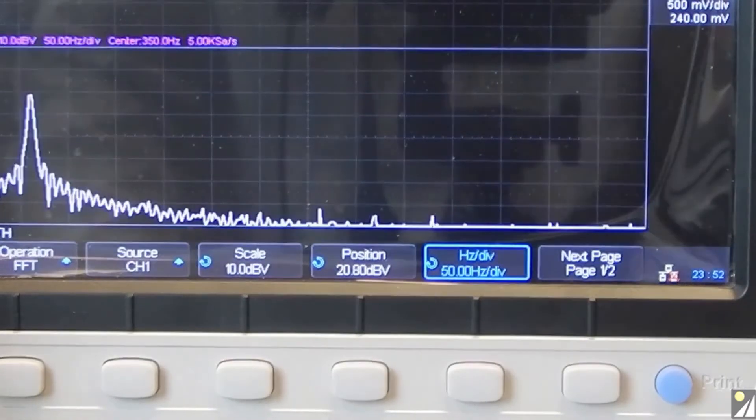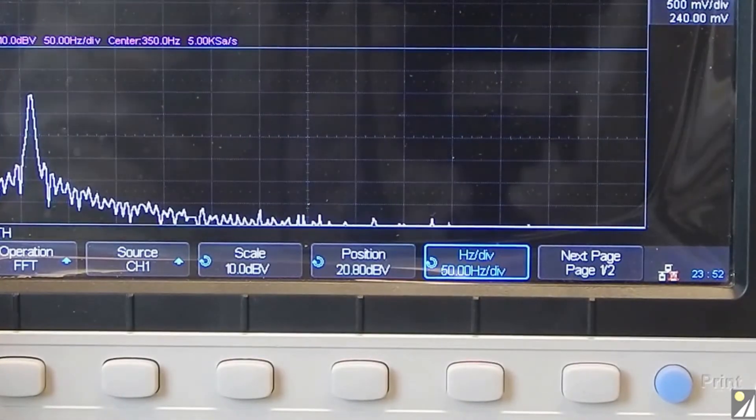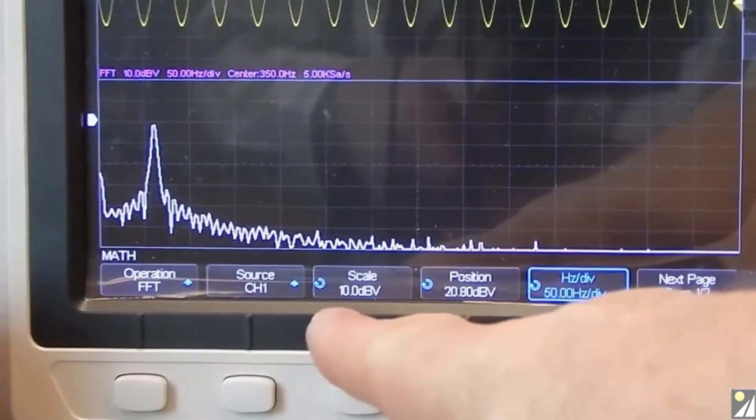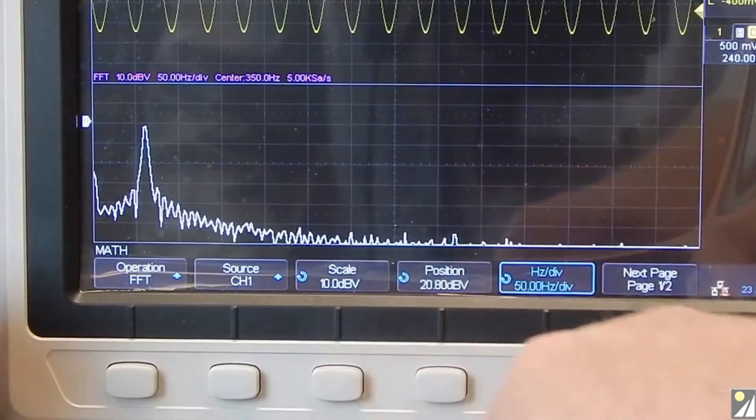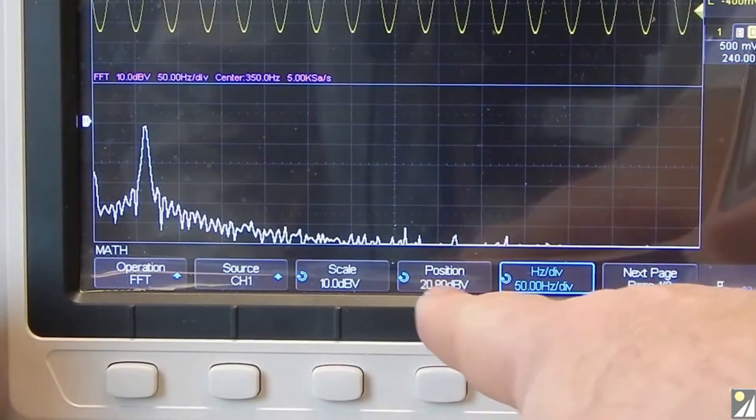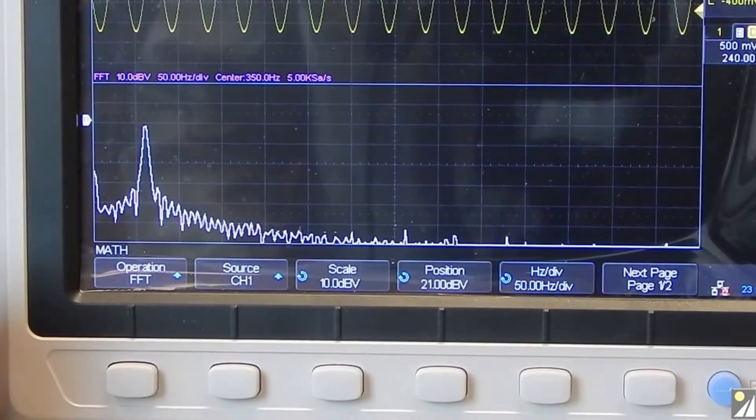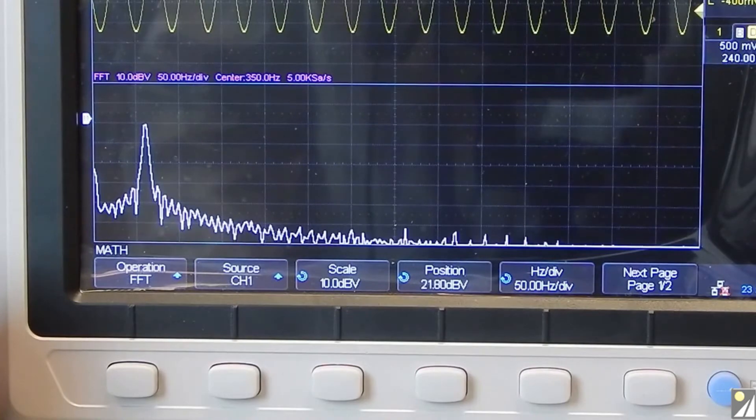And we can work with that. Oh, by the way, we also were set at 10 dBV, 10 dB per division, and we can adjust the position here if we like.